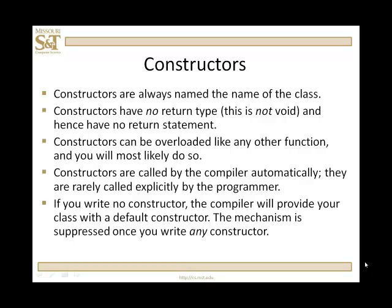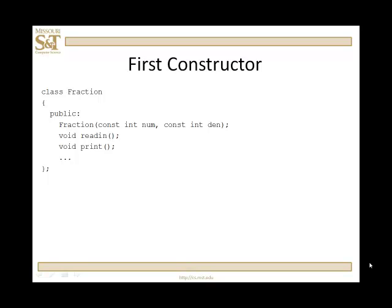So, if you write one constructor, most likely you're going to write a default constructor along with it. So, let's take a look at the first constructor. For our fraction class, here it is. Of course, its name is fraction. Notice that it has no return type. We're going to pass to it two integers, one for numerator, one for denominator, and here's the code for the definition.